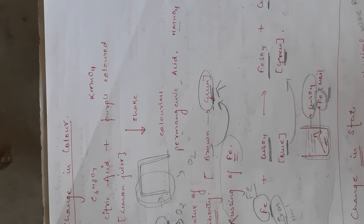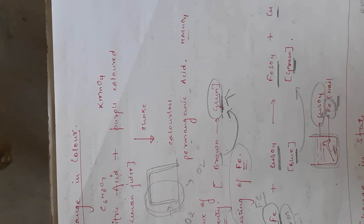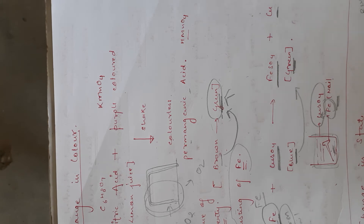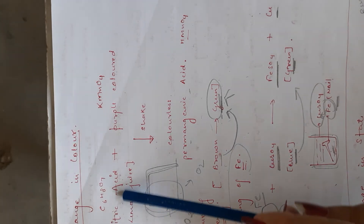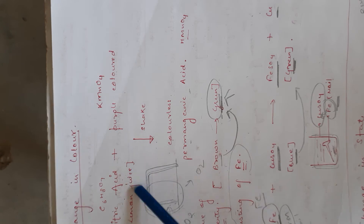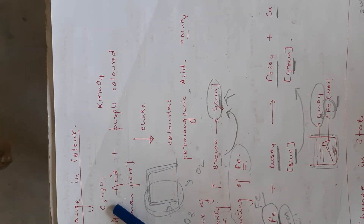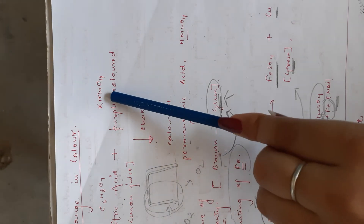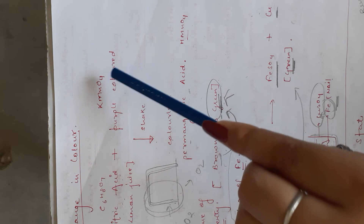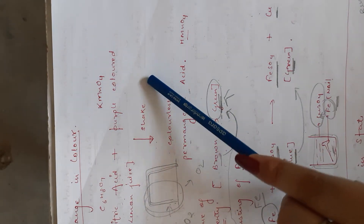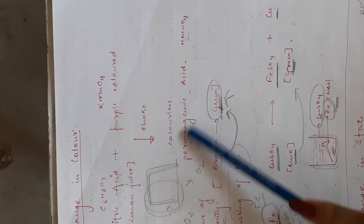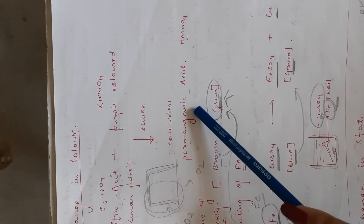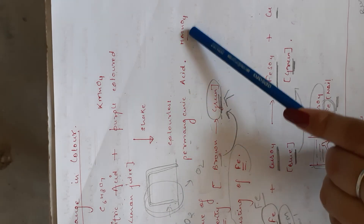Another example of change in colour: citric acid is the chemical name for lemon juice, with formula C₆H₈O₇. When it reacts with KMnO₄ — potassium permanganate, which is purple in colour — when you mix the two solutions together, the solution changes its colour from purple to colourless. A new product is formed called permanganic acid, which is HMnO₄.